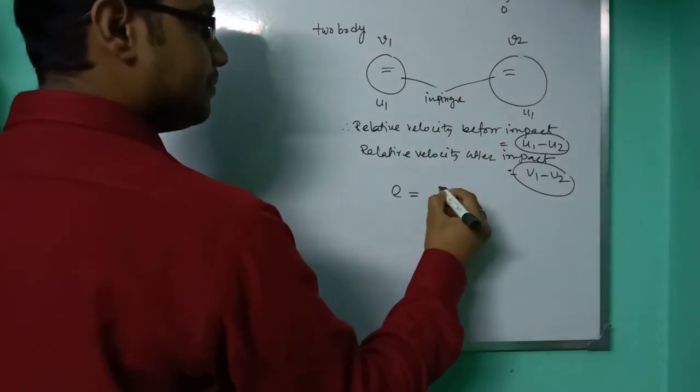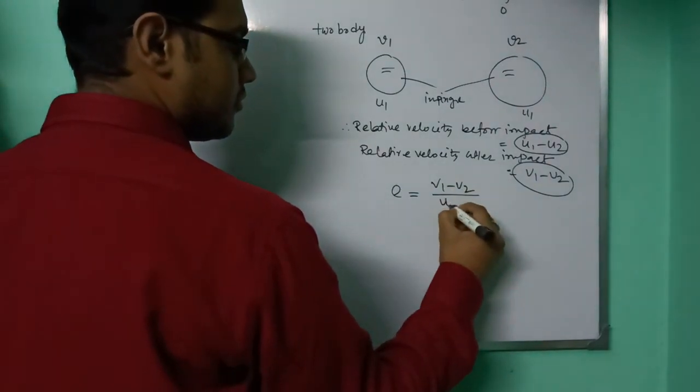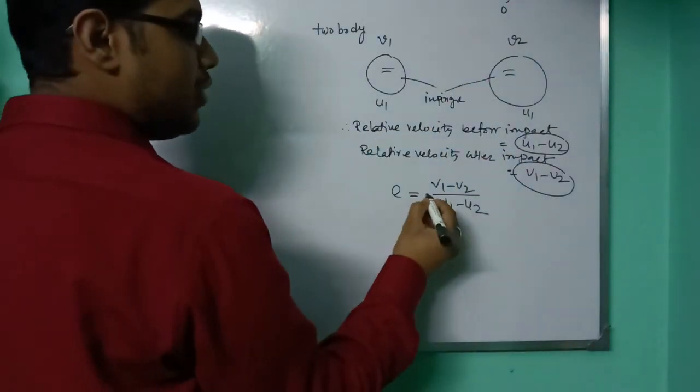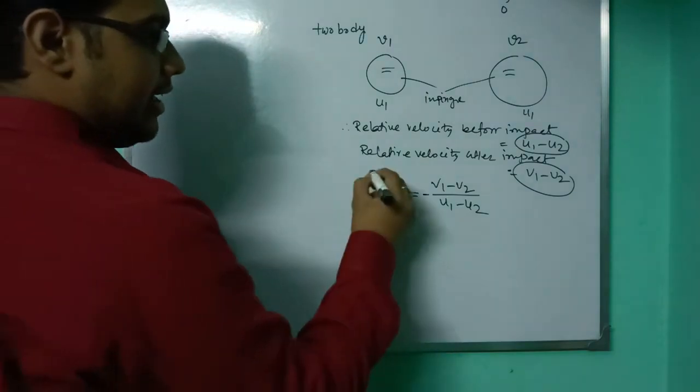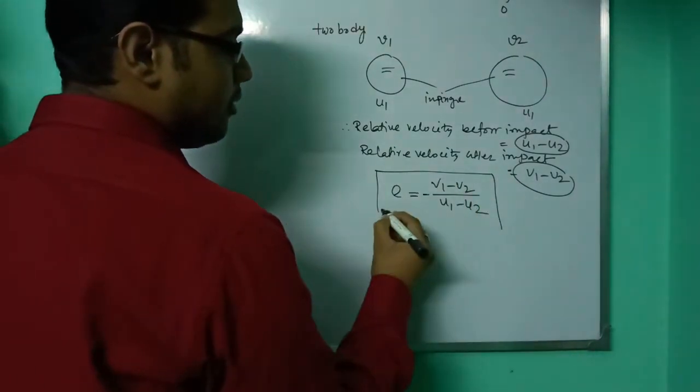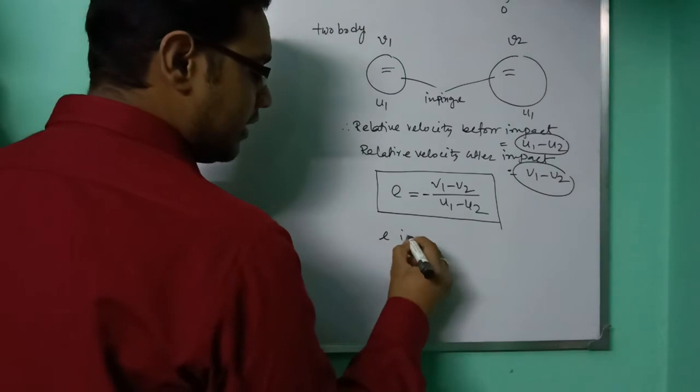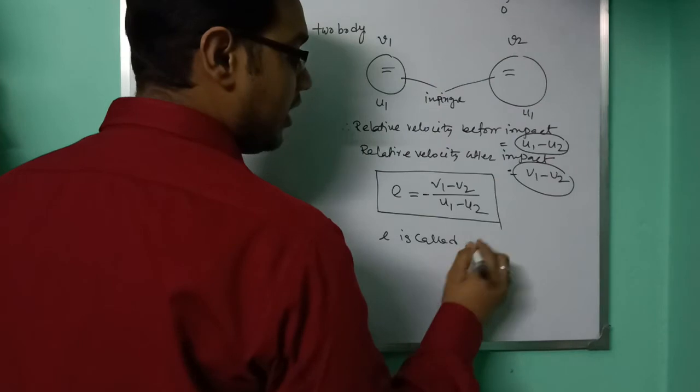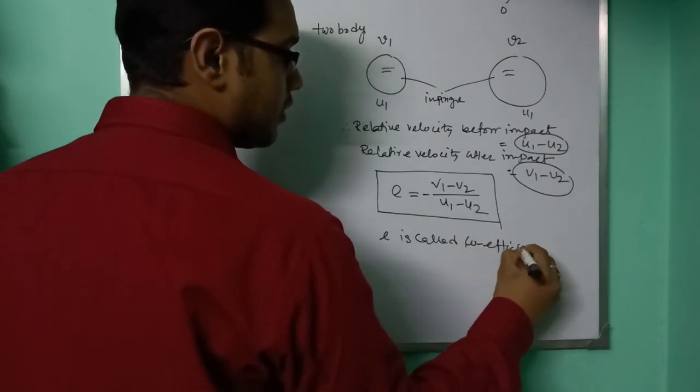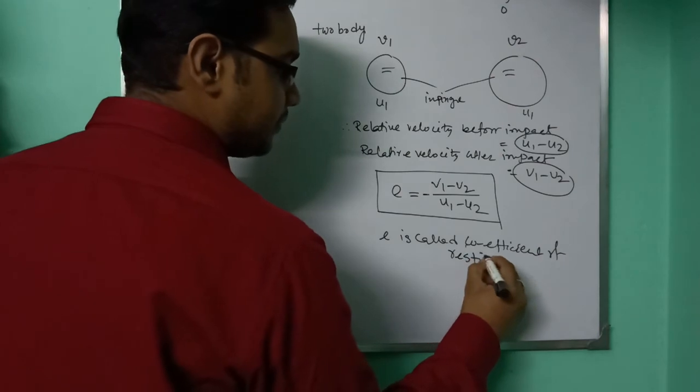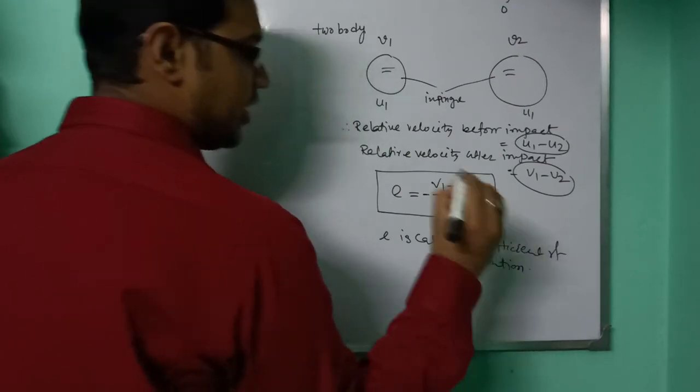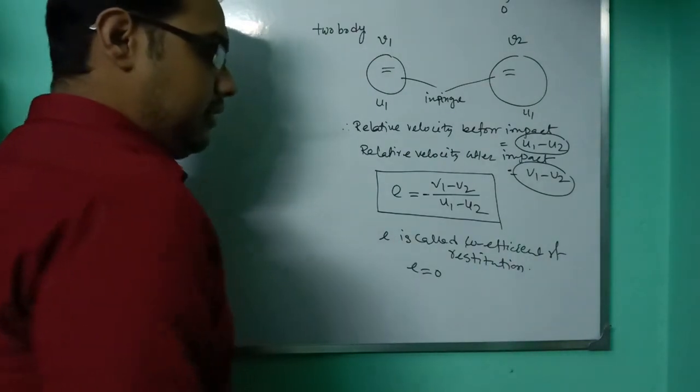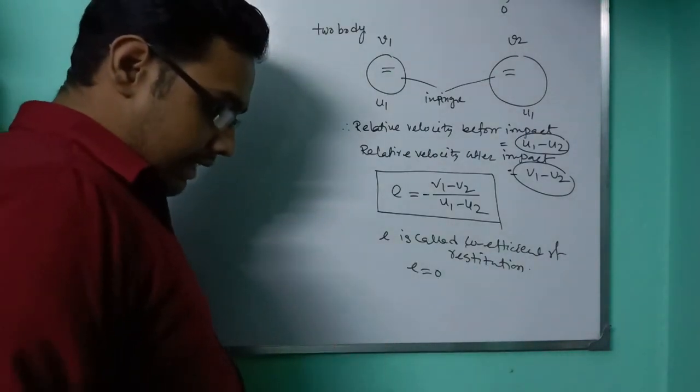Newton stated that the relative velocity before impact and after impact have a constant ratio, which is e. Since the bodies come from opposite directions, we take a negative sign. This is called Newton's experimental law, and e is called the coefficient of restitution.